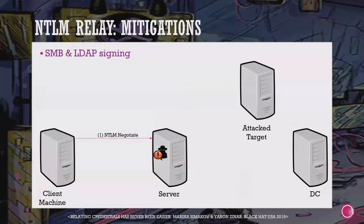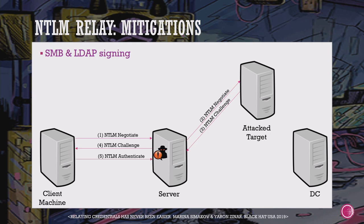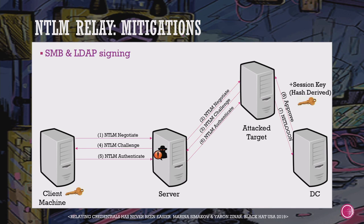In the session signing flow: a client connects to a compromised server, attackers relay the NTLM negotiation, challenge, and response, and the attack target receives the session signing key from the domain controller. The client also calculates the signing key independently. Both the client and the attack target have the signing key, but the compromised server in the middle cannot retrieve it and cannot send signed packets, so the attack fails.